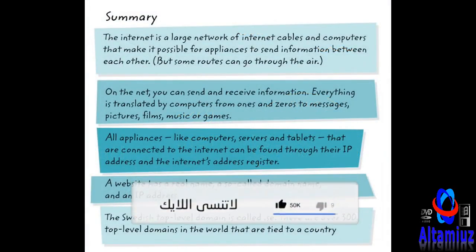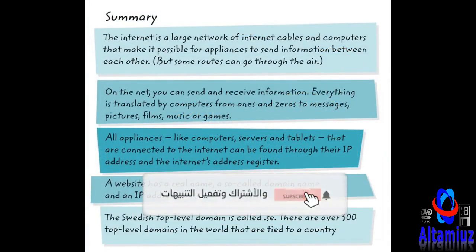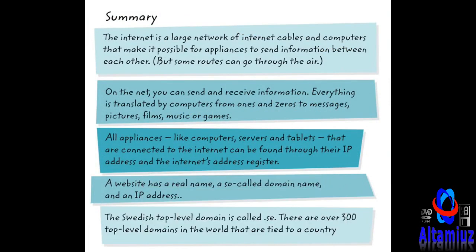Now to summarize. The net is easy to use because there is a system with addresses so that you can always find the right way on the internet. The internet is a large network of internet cables and computers that make it possible for appliances to send information between each other, but some routes can go through the air. On the net, you can send and receive information. Everything is translated by computers from ones and zeros to messages, pictures, films, music, or games. All appliances, like computers, servers, and tablets, that are connected to the internet can be found through their IP addresses and the internet's address register.